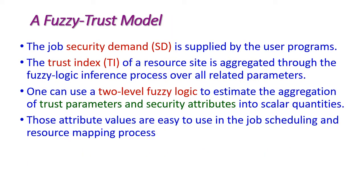The second model is the foresee trust model. Here we need to compute two factors importantly: first is security demand, that is SD, and second is trust index, that is TI. The job security demand is supplied by the user program, but the trust index TI of a resource site is aggregated through the fuzzy logic inference process over all related parameters.